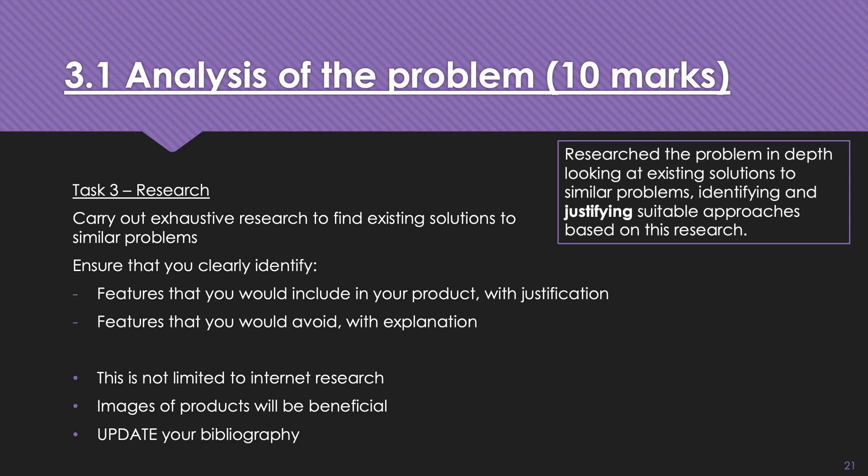And the three bullet points at the bottom, not limited to internet research. If you were doing, for example, the computer booking facility, you should be looking at what is used now. You could look at alternative paper-based solutions, anything at all. Images of products would be beneficial, whether that's screenshots or taking photographs yourself, whatever it might be. Update your bibliography. Make sure you get that done. If you don't do it when you're actually doing the research, you won't do it and it will not be good. So that's task three, research.